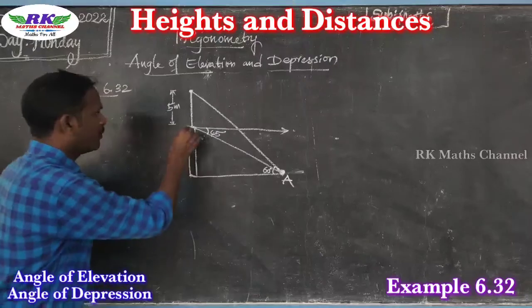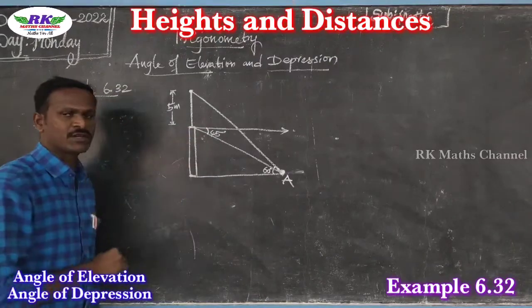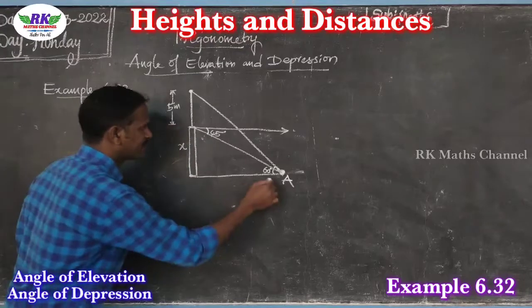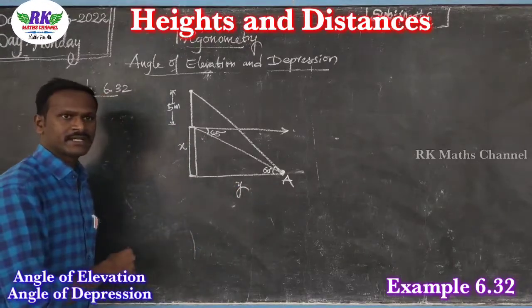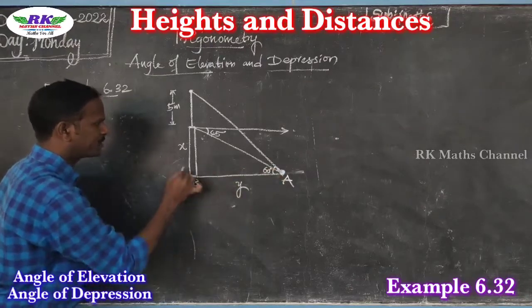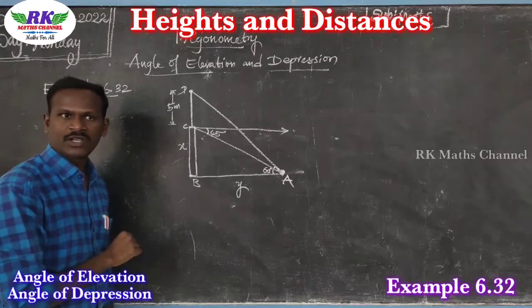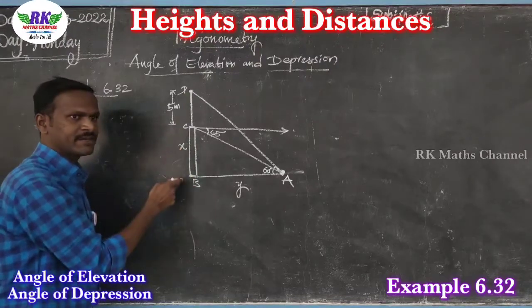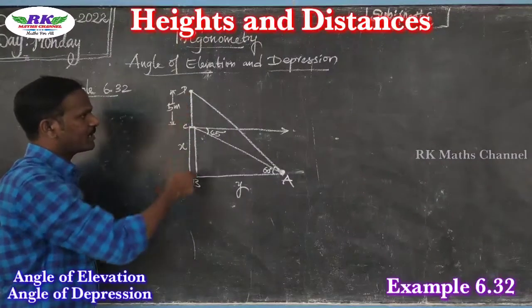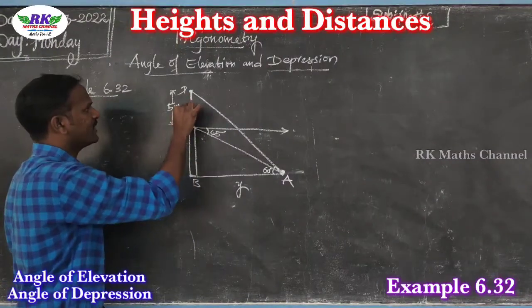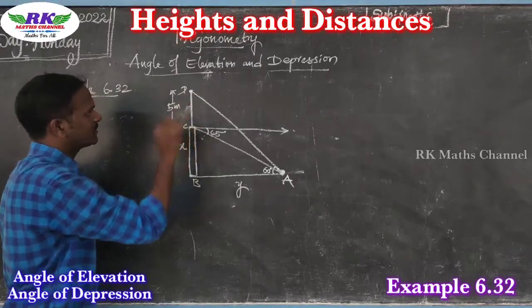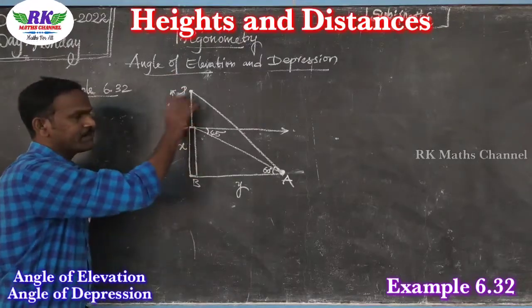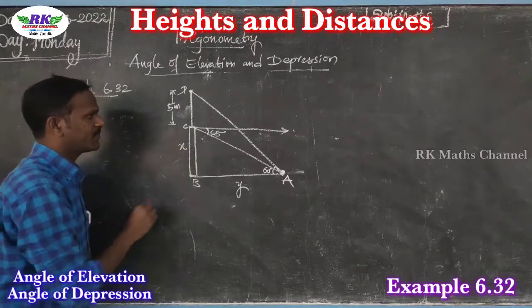We need to find the height of the tower. Let the height of the tower be x, and the pole is 5 meters, so the total height is x plus 5.